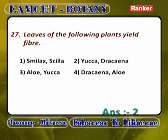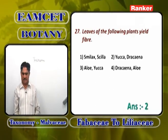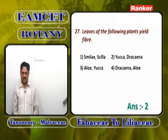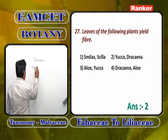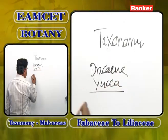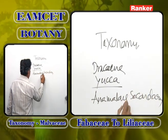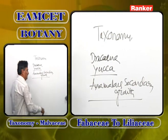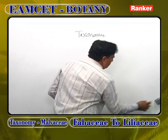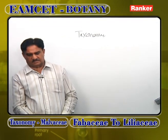Leaves of which plant of Liliaceae yield fiber? Smilax and Scilla do not give fibers. Aloe and Yucca — Aloe does not give fibers. Dracaena and Aloe does not. Fibers are given by Yucca and Dracaena. Dracaena and Yucca are two plants of Liliaceae with anomalous secondary growth and are fiber-yielding plants. Answer is 2.